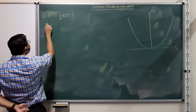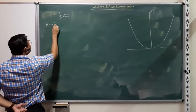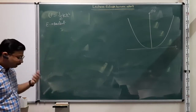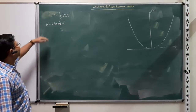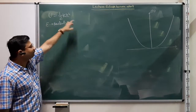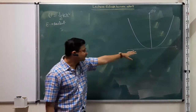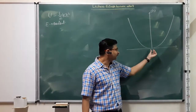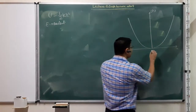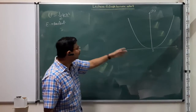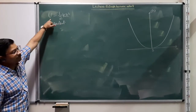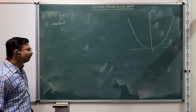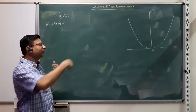The total energy E is a constant. So U as a function of x goes like this. As you keep going away from the origin — which could also be another reference point — the potential energy keeps increasing. The system stores more and more energy, or requires more and more energy to go farther.